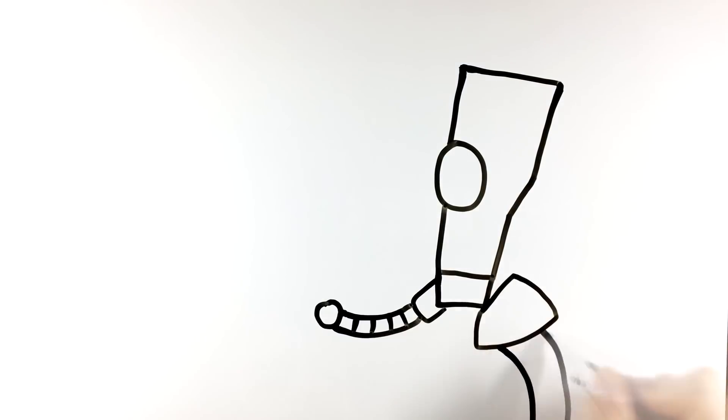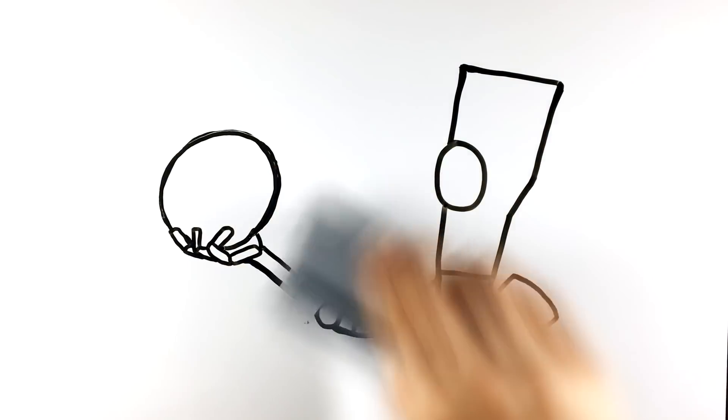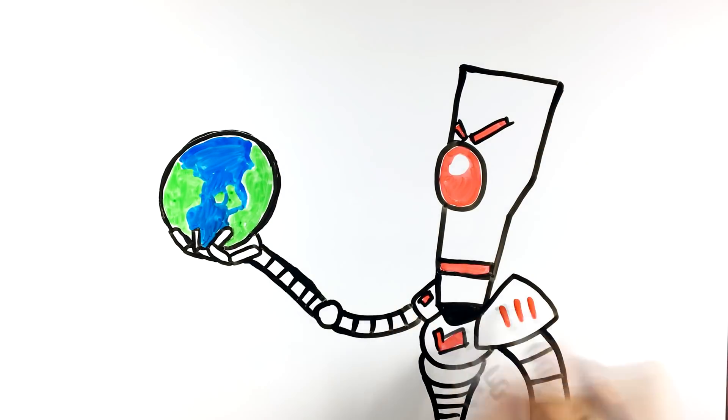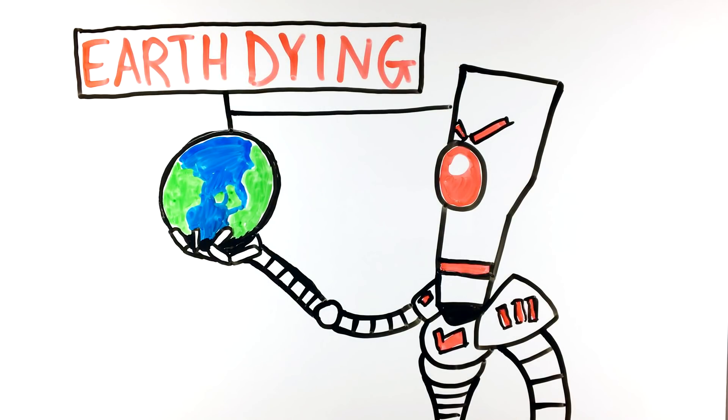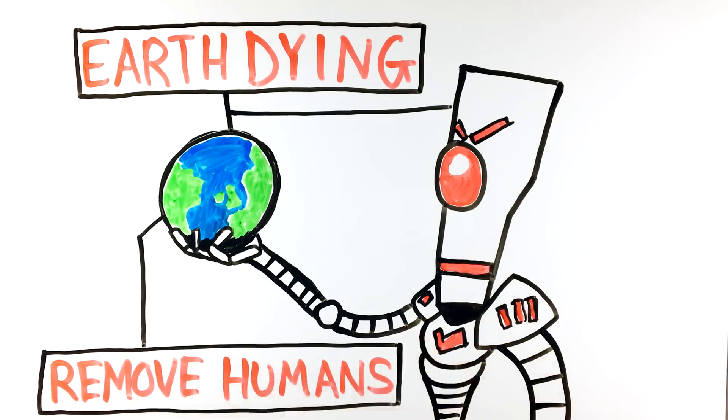It's also worth noting that a super intelligence would not necessarily have to be evil to want to wipe us out. It could be decided by AI that we are a threat to the planet when it learns of the environmental damage we have done and continue to do to it, and that the only solution is to remove us.